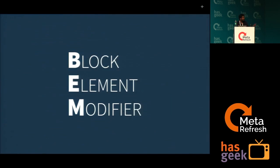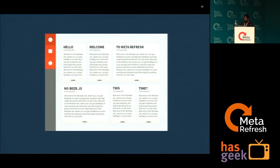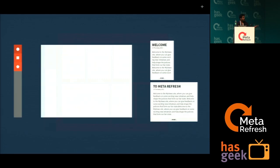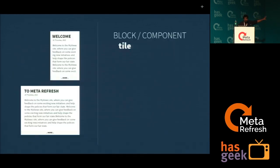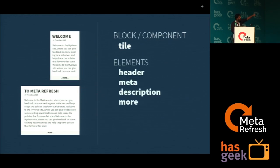BEM stands for Block Element Modifier. The concept is that your website is built up of multiple components. So you look at your website and split it into different components — you can see the sidebar, a wrapper, and some tiles. So I need to first identify the components of my website and then write the CSS. According to BEM, I called that component 'tile' — so the block is 'tile'. I found the elements: it has a header, a meta tag, some description, and a modal.